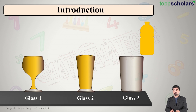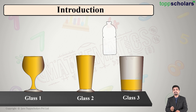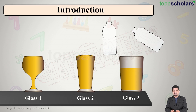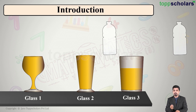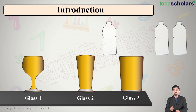Let's take the third glass. I take the bottle of juice and empty it in — it fills less than half of the glass. I take another identical bottle and empty it in — the glass is still not full. I take one more bottle of the same size and empty it in. Now the glass is full, and this time it required three bottles to fill it.